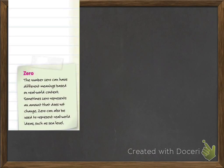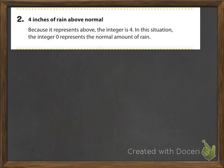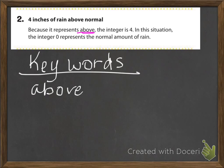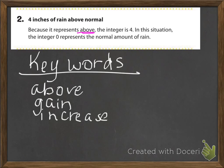On the left-hand side of your page it says the number 0 can have different meanings based on real-world context. Make a note that 0 can have different meanings — sometimes 0 represents an amount that does not change, and 0 can also represent real-world ideas such as sea level. Then it says 4 inches of rain above normal. Because it represents above, one key word we're looking for is above. Off to the side you can write: above, gain, increase — those are words you're going to see for a positive representation.